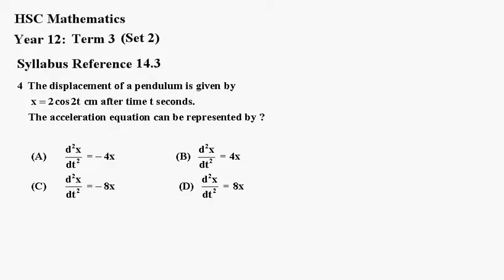Now we'll differentiate this twice. Okay, so the first instance will have that dx/dt is equal to, now this 2 will come down the front, the differential of cos you get minus sine, so it'll be minus 4 sine 2t.